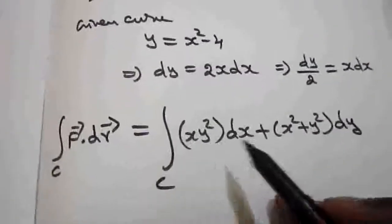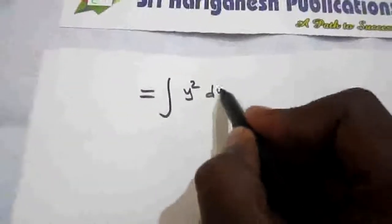And remaining x dx. What is x dx here? dy/2. So now it is dy/2.